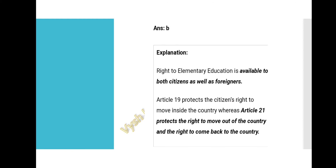So statements 2 and 3 are wrong, making Option B the correct answer. Right to elementary education is available to both citizens and foreigners. Article 19 protects citizens' right to move inside the country, whereas Article 21 protects the right to move out of and come back to the country.